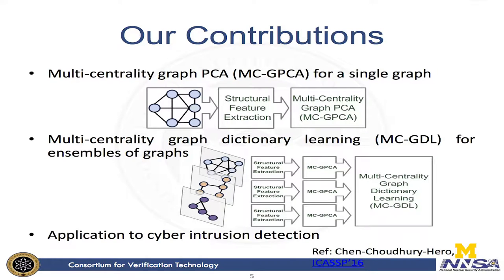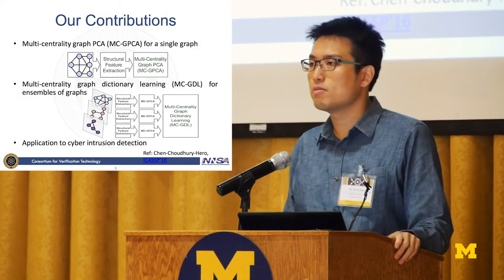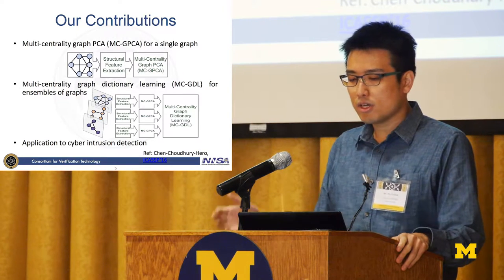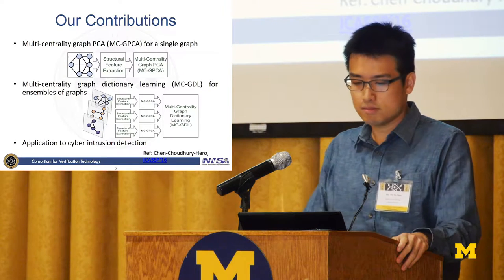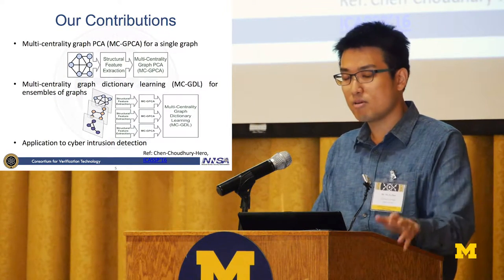I would like to summarize our contributions. We have several graph mining techniques developed to extract structural features from a graph. For a single graph, we have a technique called multicentrality graph principal component analysis. If you have multiple graph observations, we learn a joint vector representation using multicentrality graph dictionary learning methods. We will also show how these techniques can be applied to cyber intrusion detection.